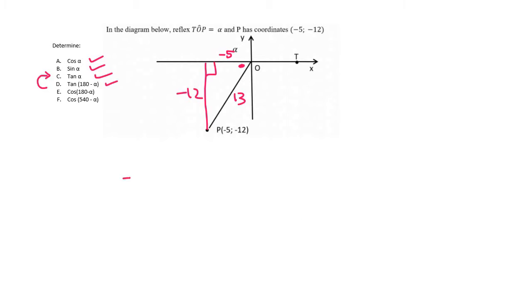Cos 180 minus, that just becomes negative cos alpha, and so that's just going to be the negative of what we got in A, and so the answer is going to be negative negative 5 over 13, and that actually just becomes positive 5 over 13.